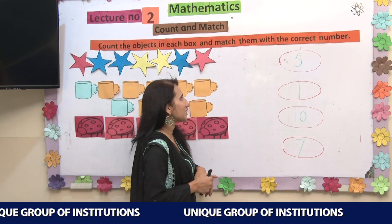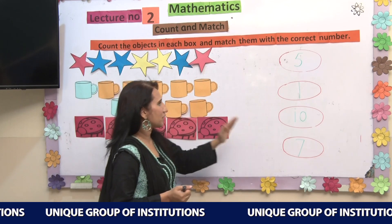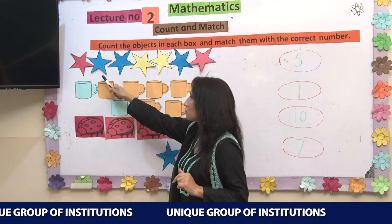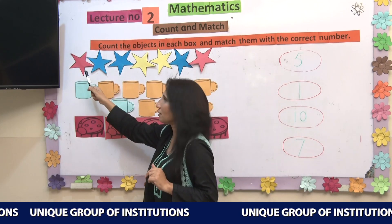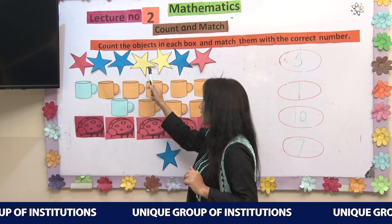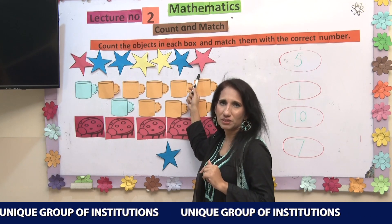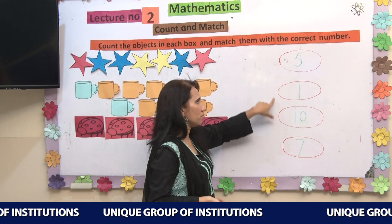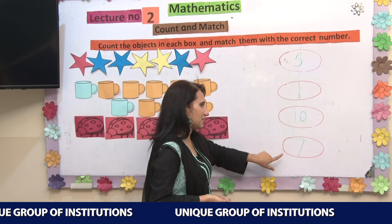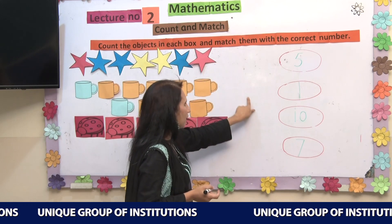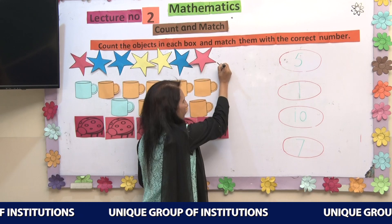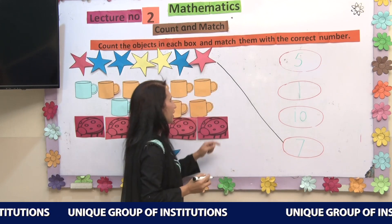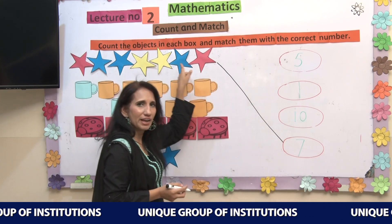Now we will do another activity: count and match. Earlier we did count and write, but now we count and match according to the numbers. Let's count these stars: 1, 2, 3, 4, 5, 6, 7. There are 7 stars. Let's find where number 7 is written and draw a line to join them. I have matched the stars with number 7.